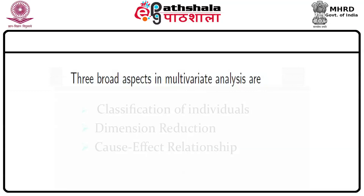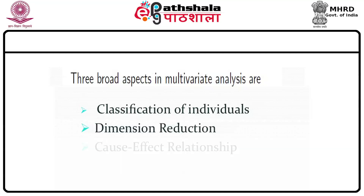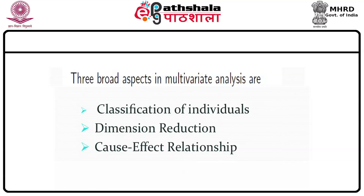Primary objectives of applied multivariate studies can be broadly classified into three groups: classification of individuals, dimension reduction, and cause-effect relationships. By classification of individuals, we mean that given a group of individuals with several characteristics, we want to find out how closely the individuals resemble one another — finding the distance between individuals regarding their similarity. Classification is easy in the univariate case but becomes more complex as the number of variables increases.